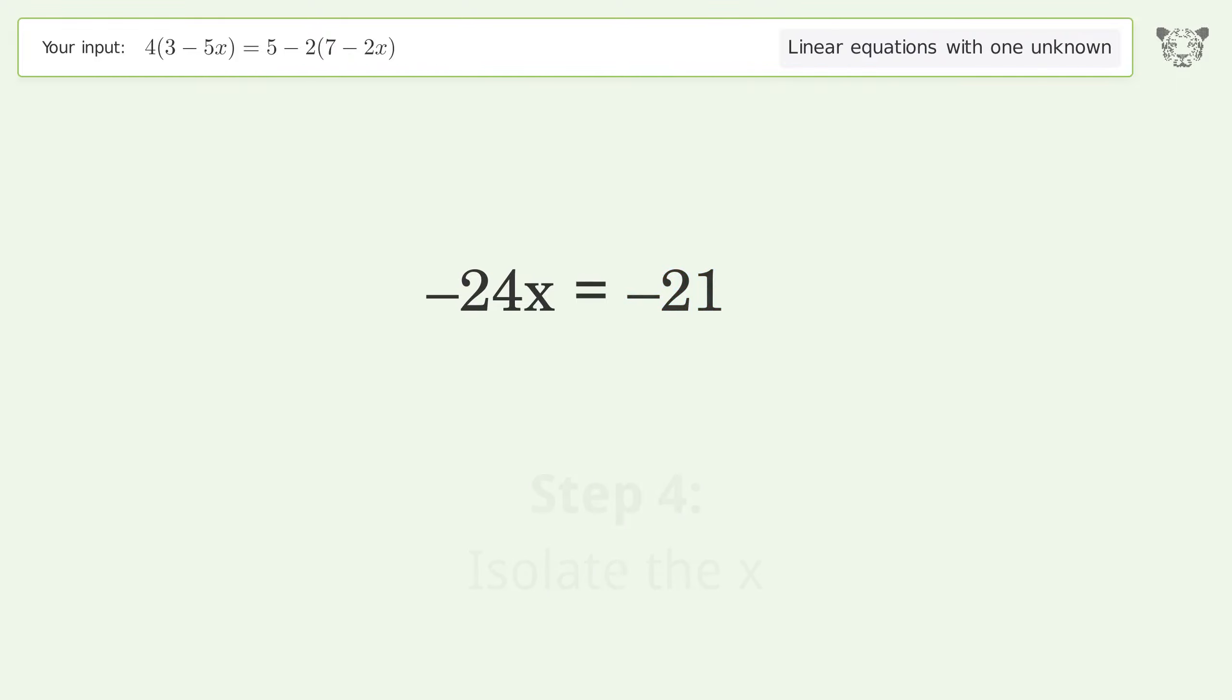Isolate the x by dividing both sides by negative 24. Cancel out the negatives.